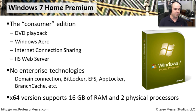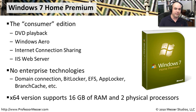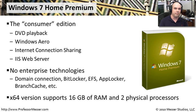Windows 7 Home Premium does support 64-bit processors, up to 16GB of RAM, and up to two physical CPUs — some really nice capabilities. So if you want a souped-up home computer, Windows 7 Home Premium may be the one for you.